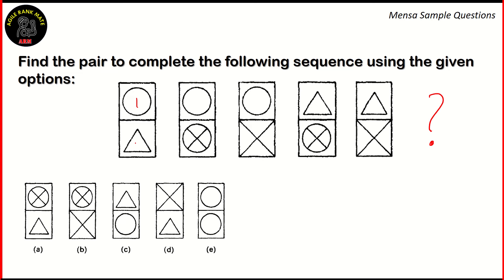You have a circle and a triangle, then you have the same circle and a different circle with an X in it, then you have a circle and a square with an X in it, then you have the triangle from before and the circle with an X, then you have the triangle and the square with an X. So this is how the sequence goes. Now if you look at the sequence, you see that we have four figures in total, and every figure has to pair up with one of the other figures.